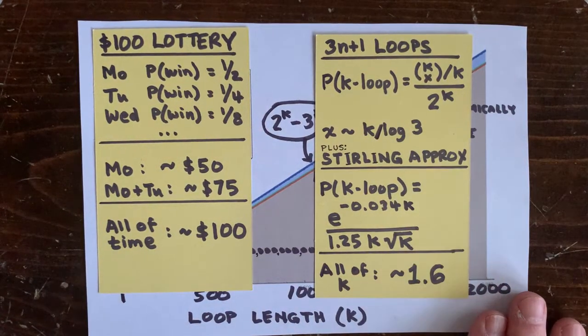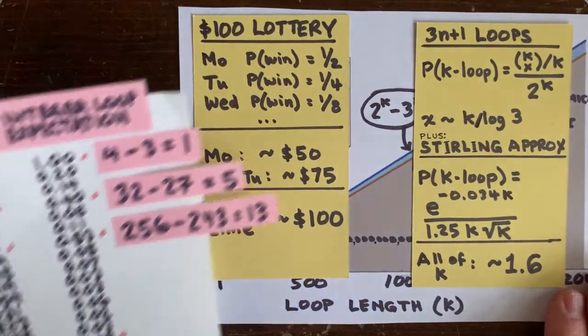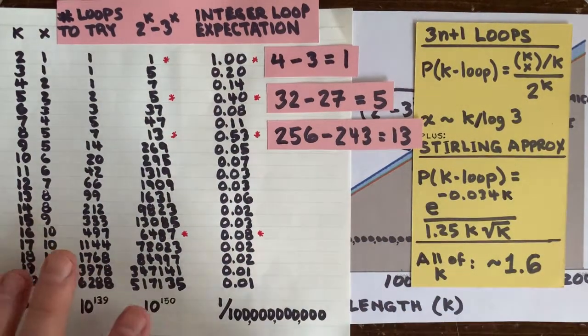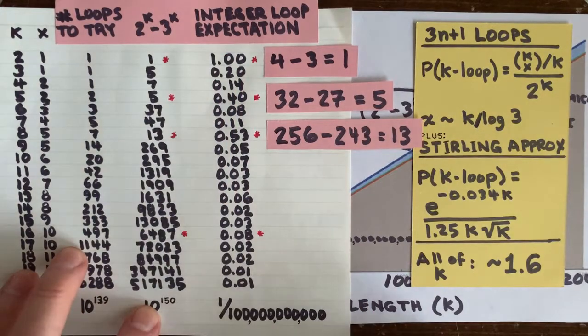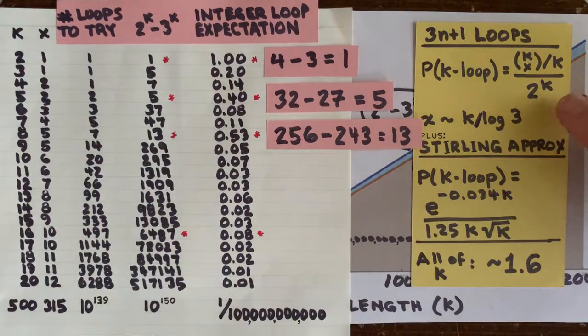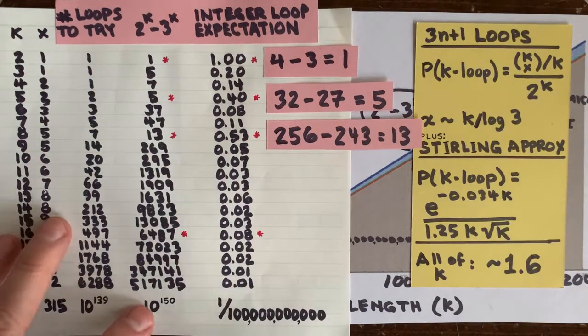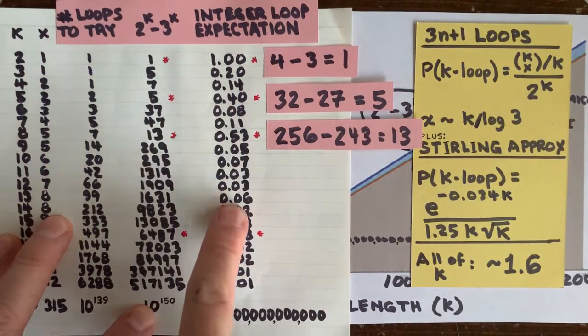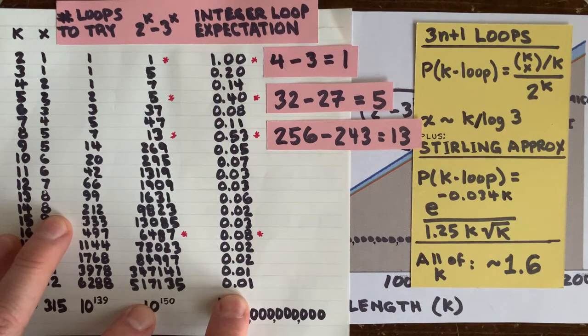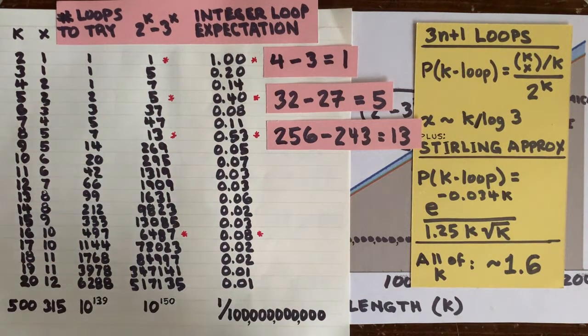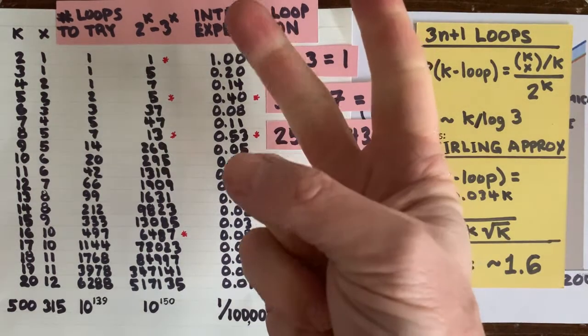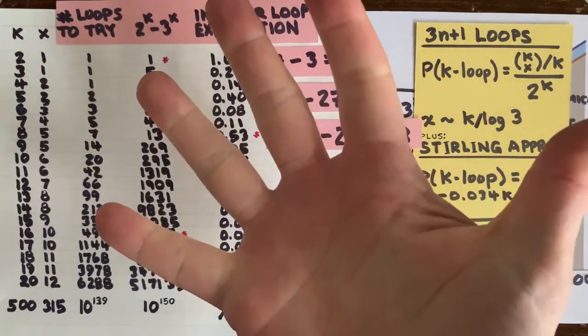Now that's pessimistic like I said, because we're assuming that 2 to the k minus 3 to the x is basically close to 2 to the k. It's a pretty good assumption at large numbers but not small ones. And remember going back to this chart, we expect over 2 and a half loops total. Either way, if we look all the way down the number line, we really only expect to find a finite handful of loops, no more than you could count on one hand.